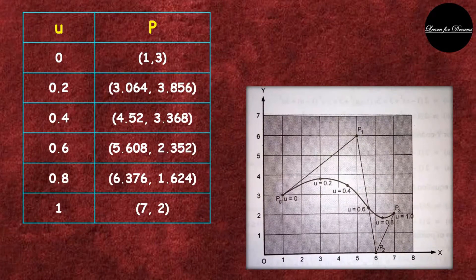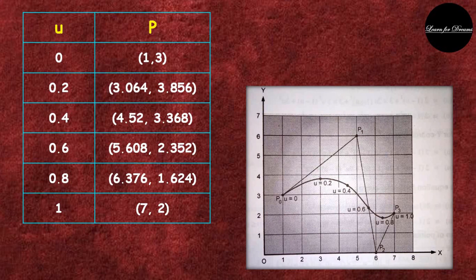So this is the final table for different u values, and this is how a Bezier curve plot looks like.